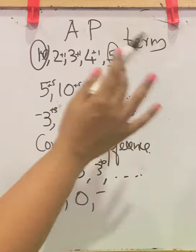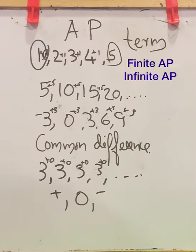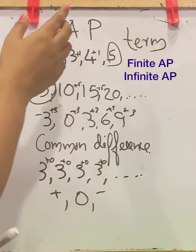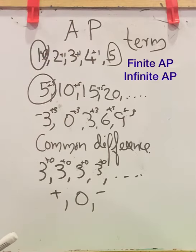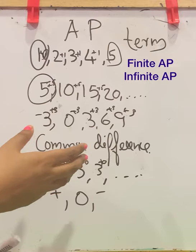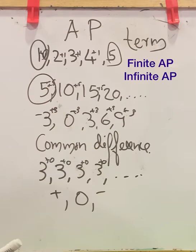In an infinite arithmetic progression, we cannot say what the last term is, but we can say this is the first term. So we have finite arithmetic progression, which ends at a particular term and has a last term, and infinite AP, which never ends at a particular term — it will continue, so it has no last term. But in both cases, we have a first term.